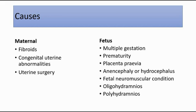The causes of breech presentation include maternal factors such as fibroids in the uterus, congenital uterine abnormalities like bicornuate or septate uterus, or previous uterine surgery like myomectomy. Fetal causes include multiple gestation, prematurity, placenta previa, anencephaly, hydrocephalus, fetal neuromuscular conditions, and abnormalities of liquor volume such as oligohydramnios or polyhydramnios.